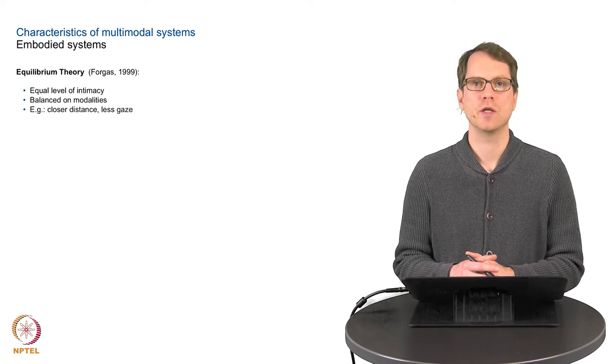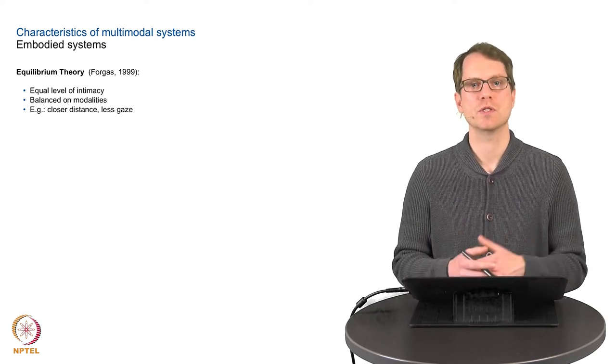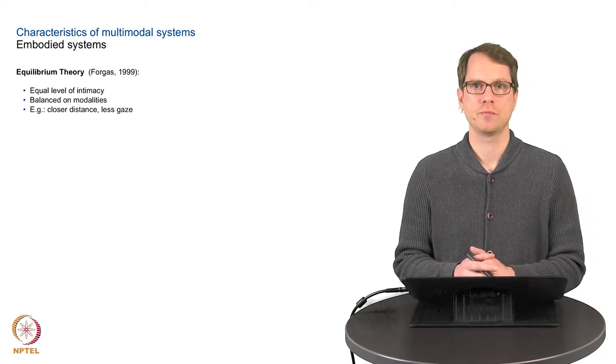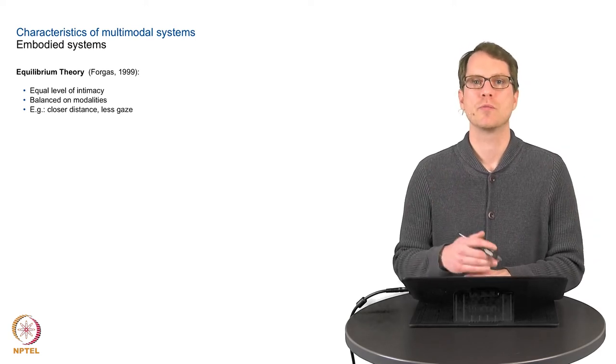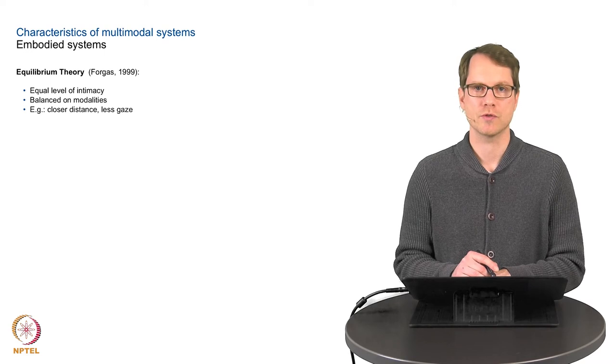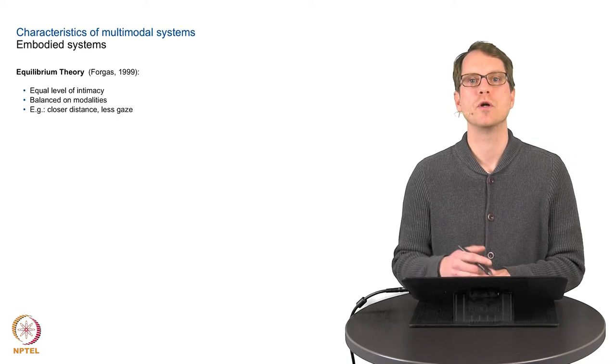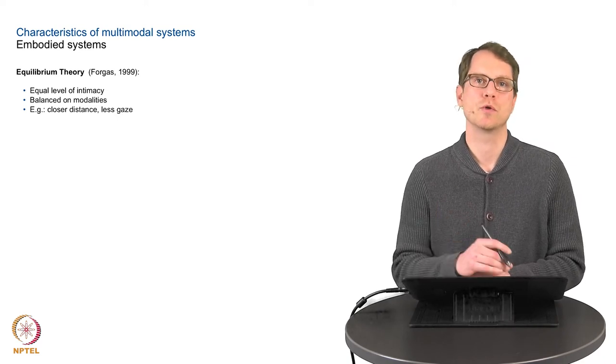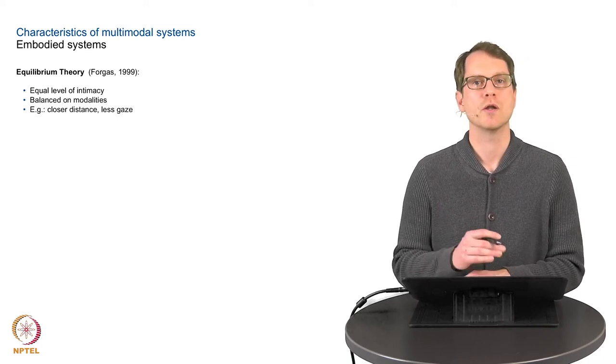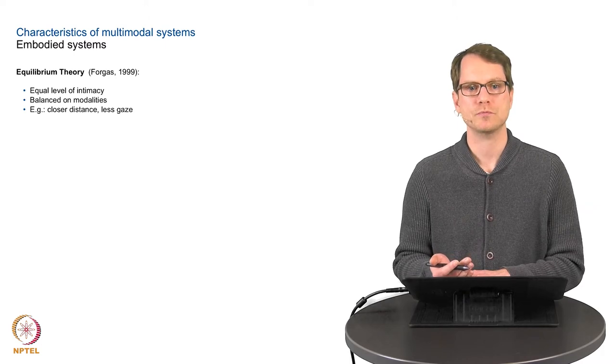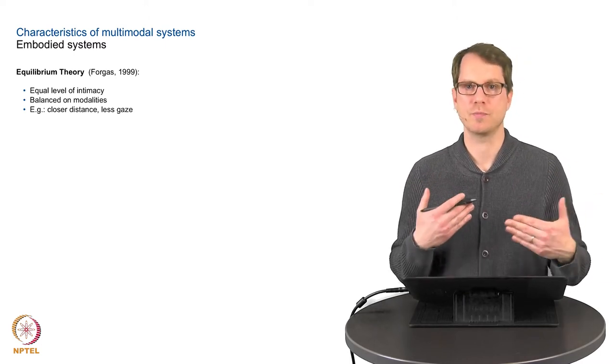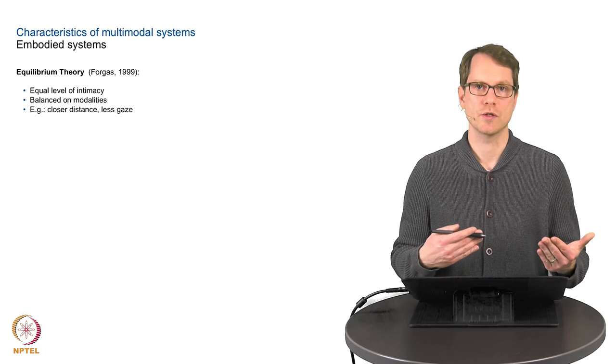For example, if we are strangers, we tend to be far away from each other and do not disturb the personal space of the other person. But consider the example of an elevator where it's really crowded. You cannot avoid coming into the personal space of another person. In order to compensate for this, because the social signal of the distance is not appropriate,